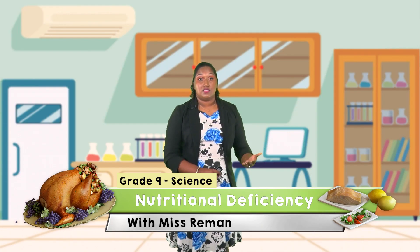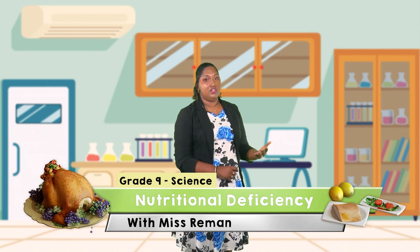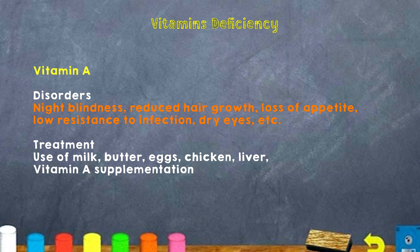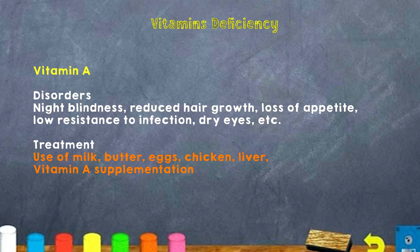Next, we look at vitamin deficiencies, starting with vitamin A. A lack of vitamin A can cause night blindness, reduced hair growth, loss of appetite, low resistance to infection, dry eyes, and others. To treat vitamin A deficiency, we use lots of milk, butter, eggs, chicken, liver, and vitamin A supplements.